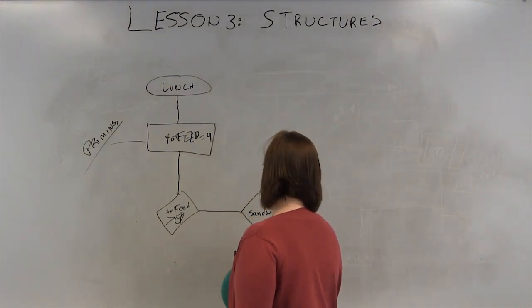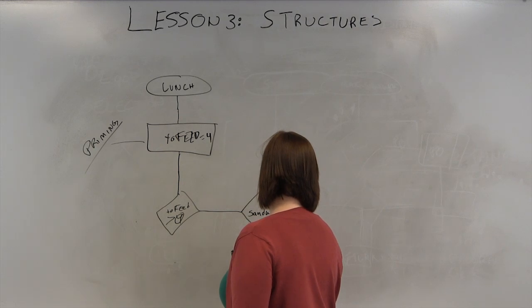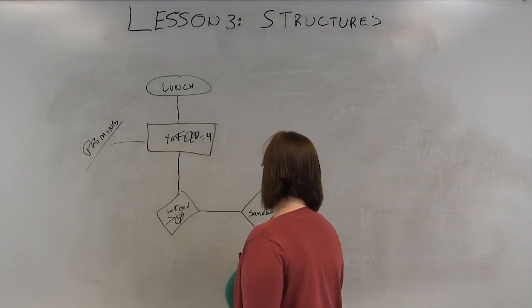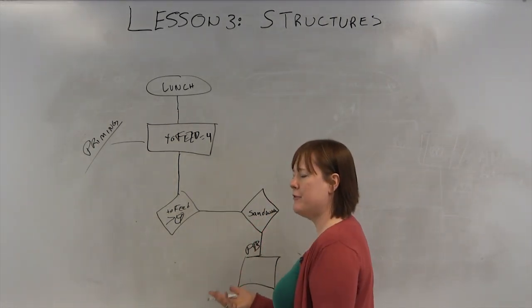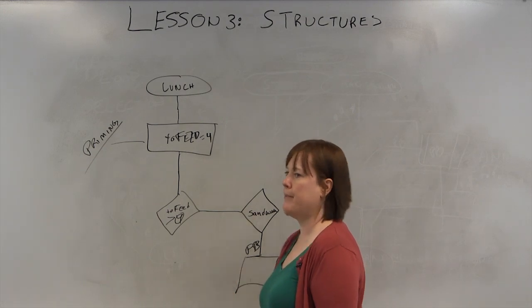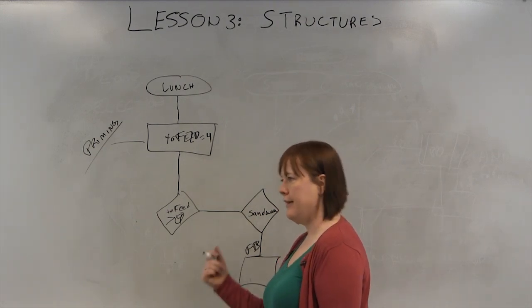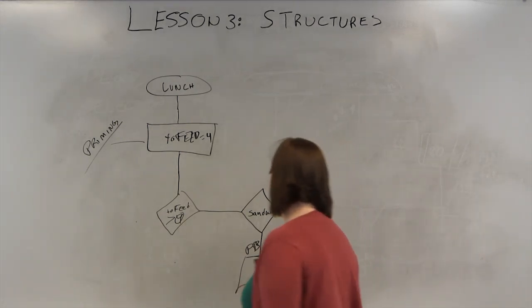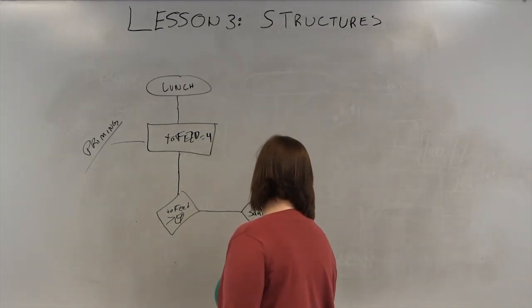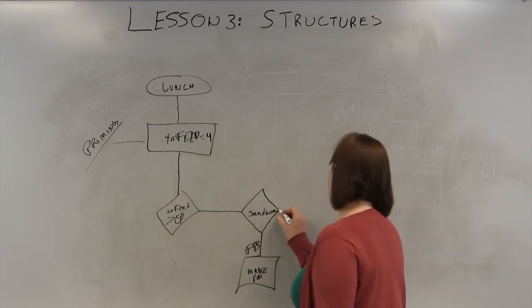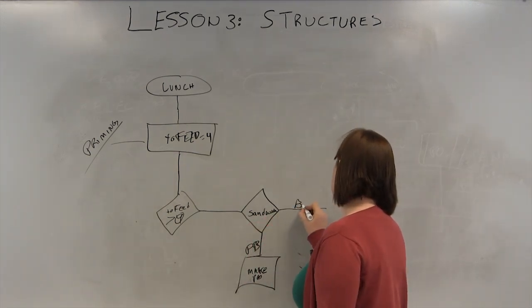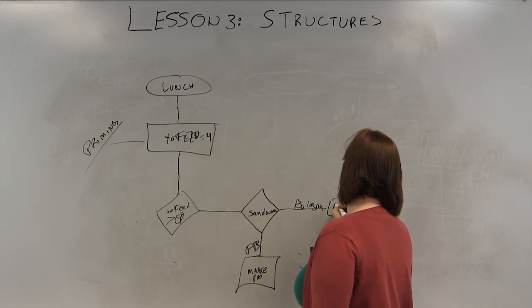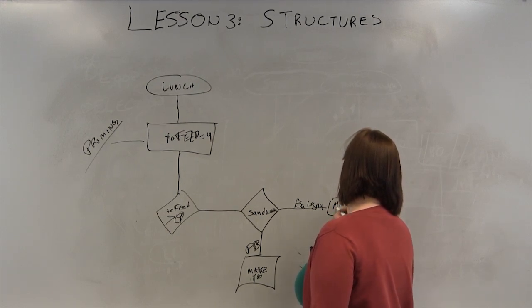And we might have a peanut butter one down here. We'll simplify it, we won't go through all the steps. Typically in flowcharting you don't go through every step. You just say make a peanut butter sandwich. You don't say get out two slices of bread, put peanut butter on one side, put jelly on the other. You just make sandwich. Otherwise, it would be bologna, and you could make the bologna sandwich.